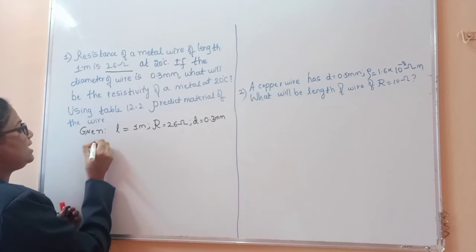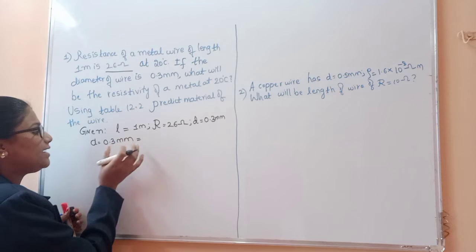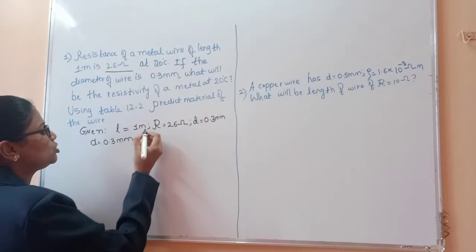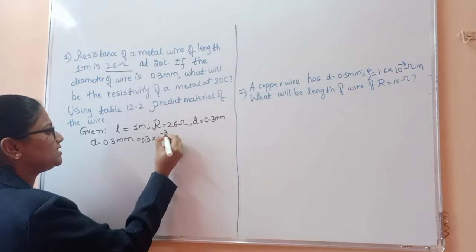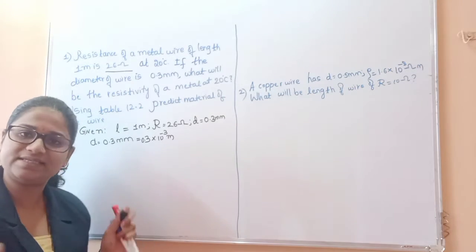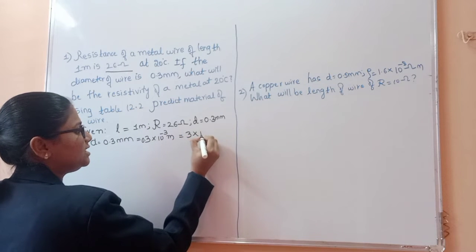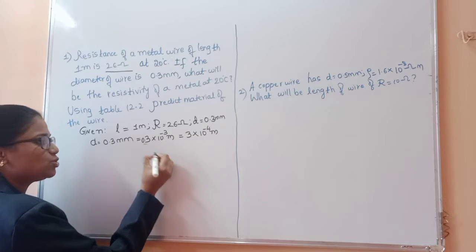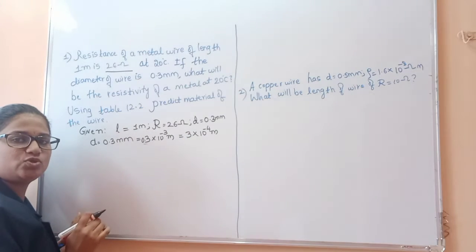Since diameter is given as 0.3 millimeter, we convert to standard units — meters. So diameter becomes 0.3 × 10⁻³ meter. To simplify, 0.3 is 3/10, so it becomes 3 × 10⁻⁴ meter.